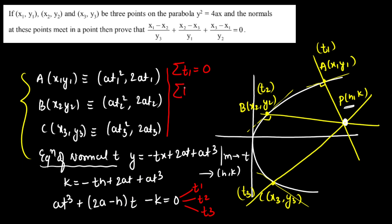Next, the summation of products taken two at a time — t1t2 + t2t3 + t3t1 — equals (2a - h)/a. Similarly, the product t1·t2·t3 = k/a. These are the three results from Vieta's formulas which I am going to use next.